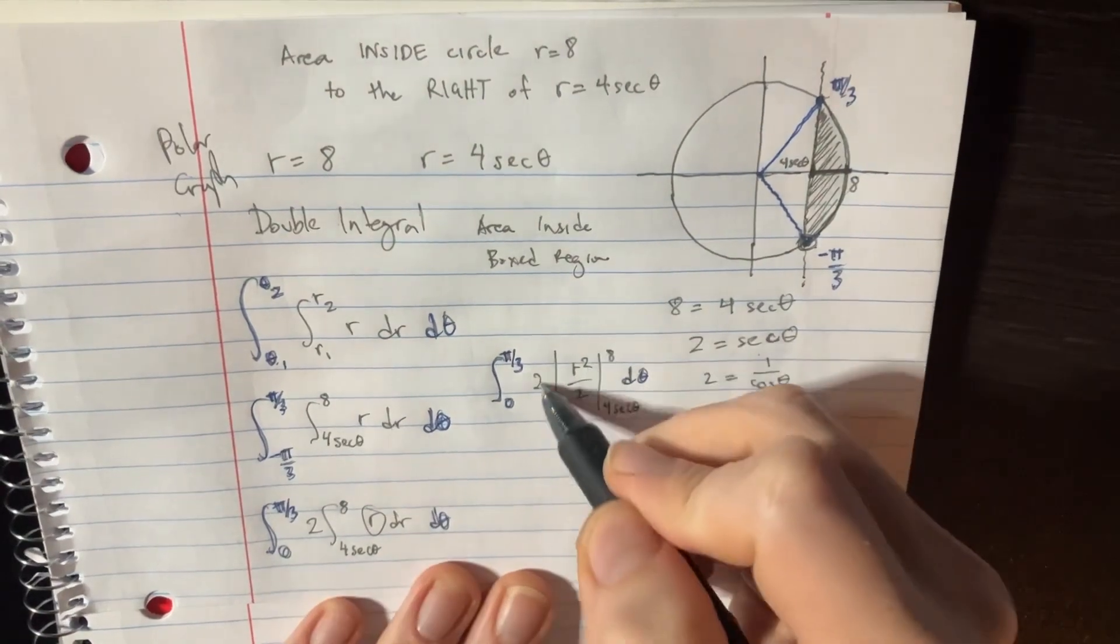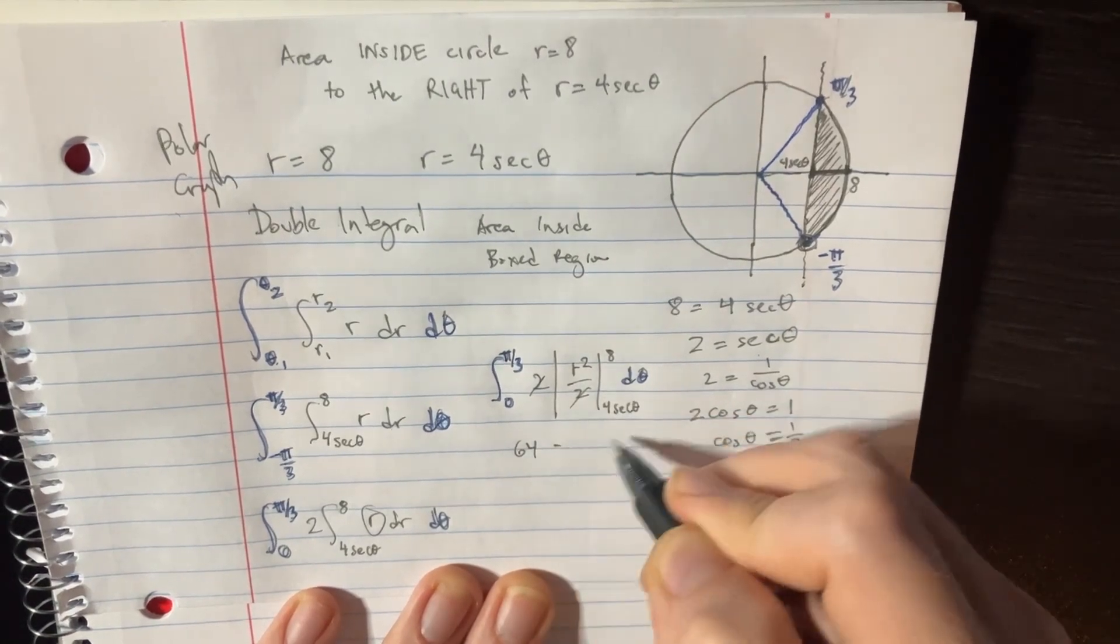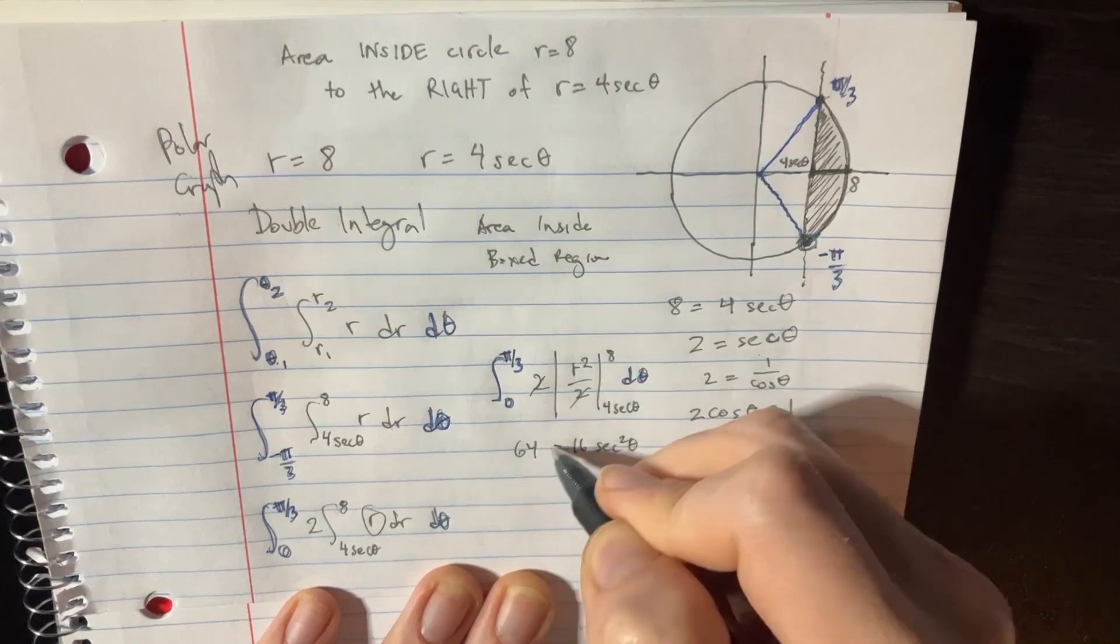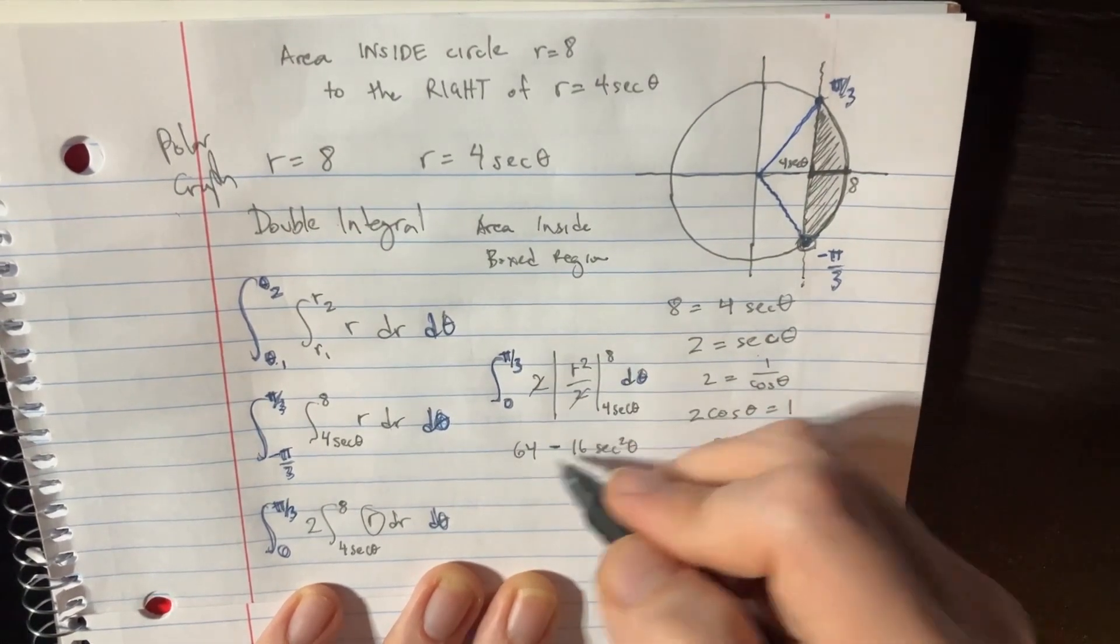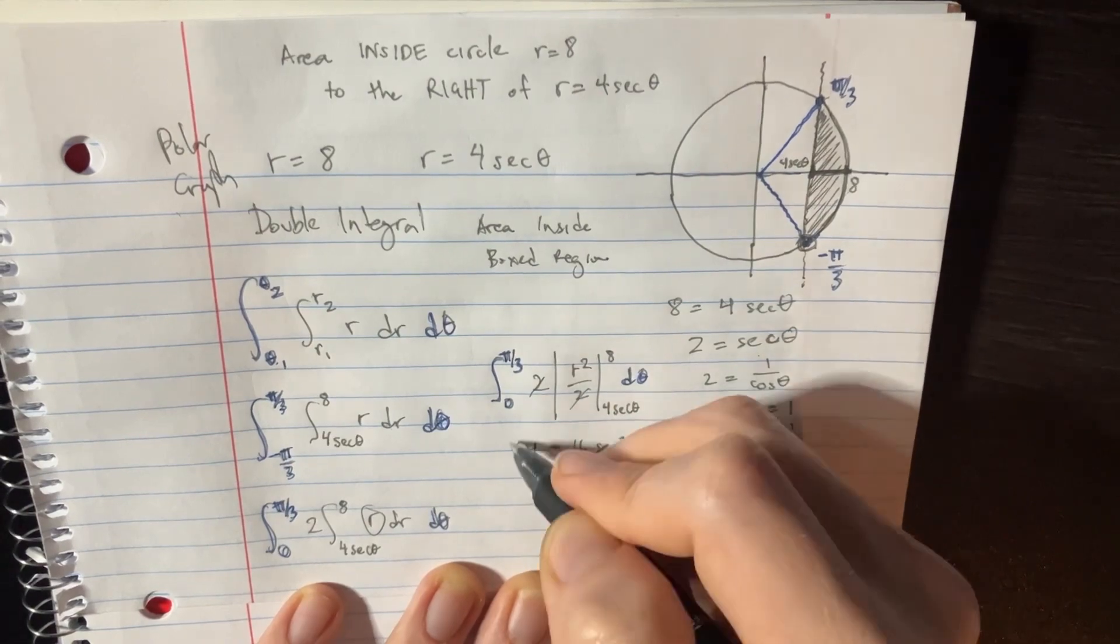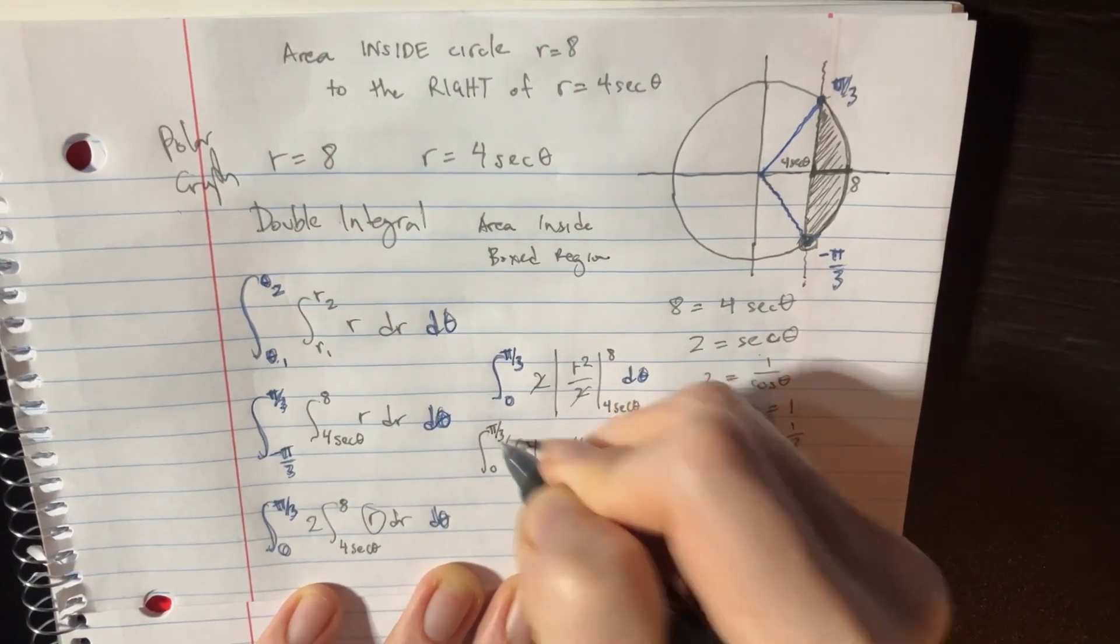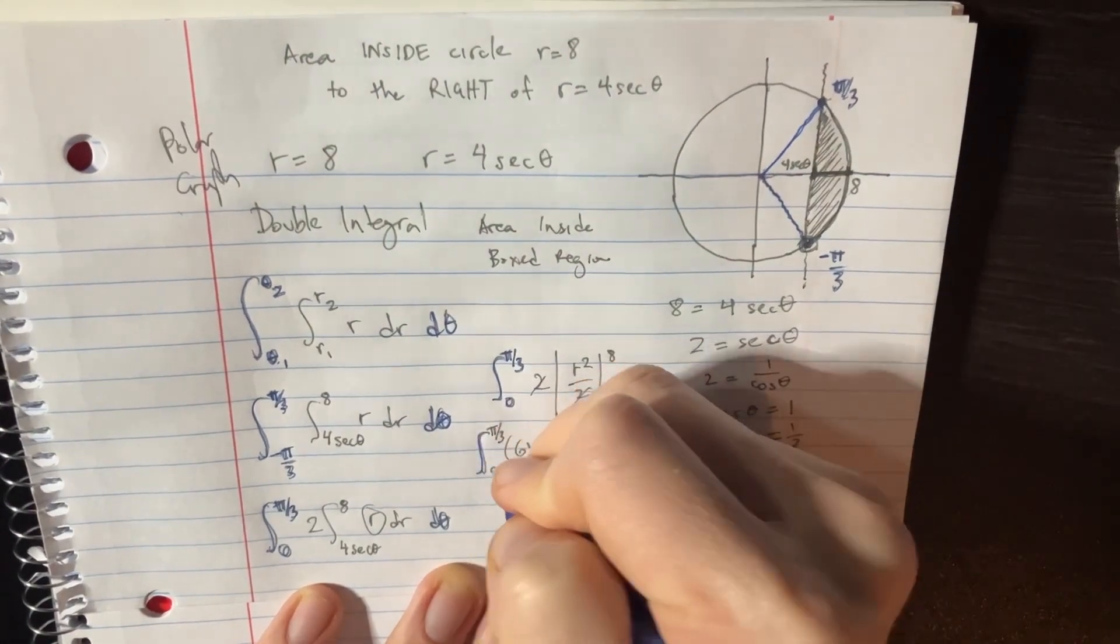These will cancel out. We have to do 8 squared, 64, minus 16 secant squared theta. I'm just plugging in 4 secant squared. Anyway, and then we're going to go from 0 to pi over 3, d theta. Just color code that one last time so y'all can see.